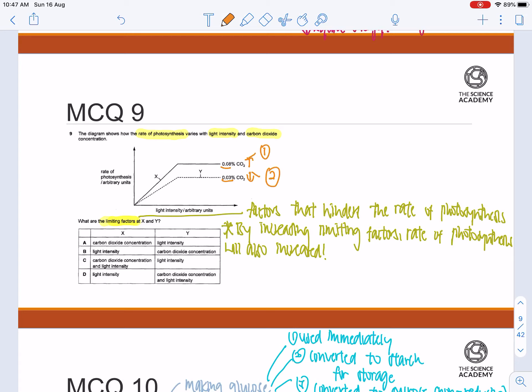So at point X, you can see that it's along the line of the linear graph. So this shows that an increase in light intensity will also lead to an increase in photosynthesis.